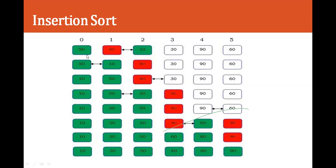Now let's have insertion sort with values 50, 80, 10, 30, 90, and 60. Pass 1: 80 is greater than 10, so swap — result: 50, 10, 80, 30, 90, 60. Then 50 and 10 — swap — result: 10, 50, 80, 30, 90, 60. Pass 2: 80 and 30 — swap; 50 and 30 — swap — result: 10, 30, 50, 80, 90, 60. Next pass: 80 and 60 — swap — result: 10, 30, 50, 60, 80, 90. Final sorted result: 10, 30, 50, 60.